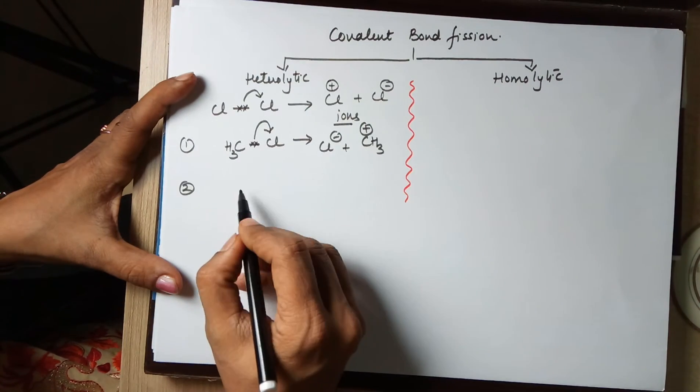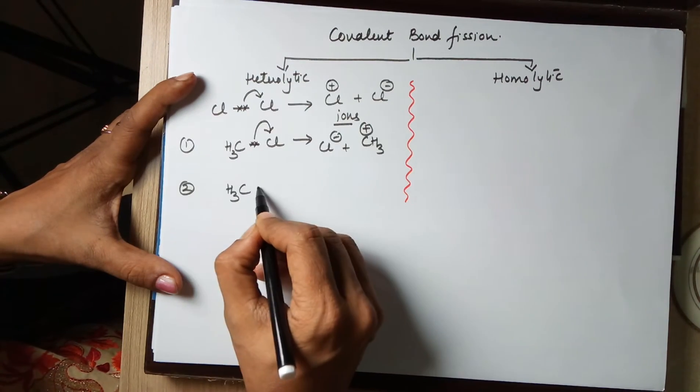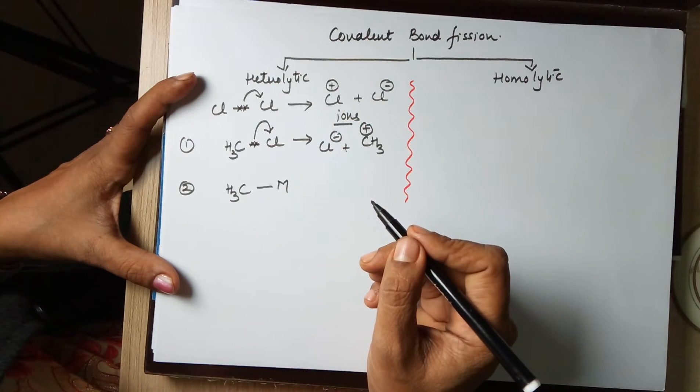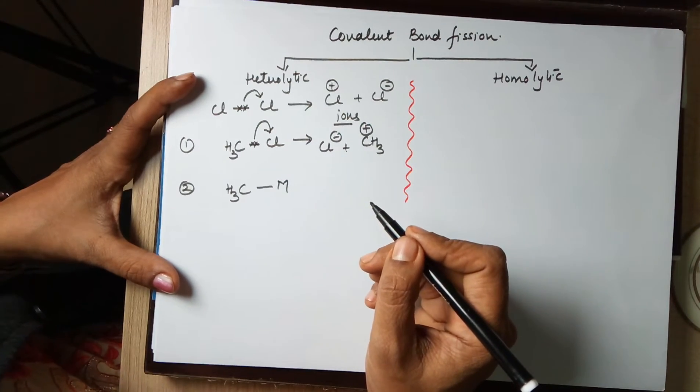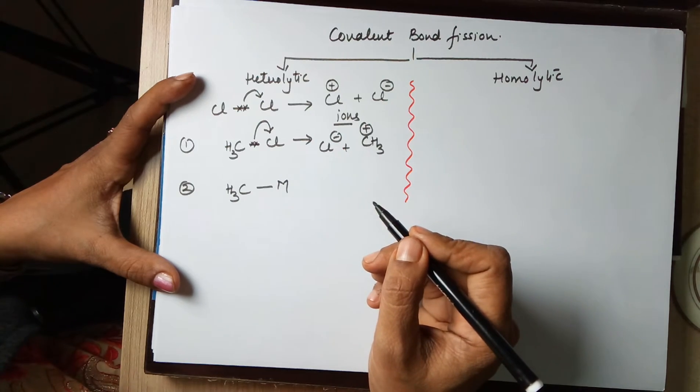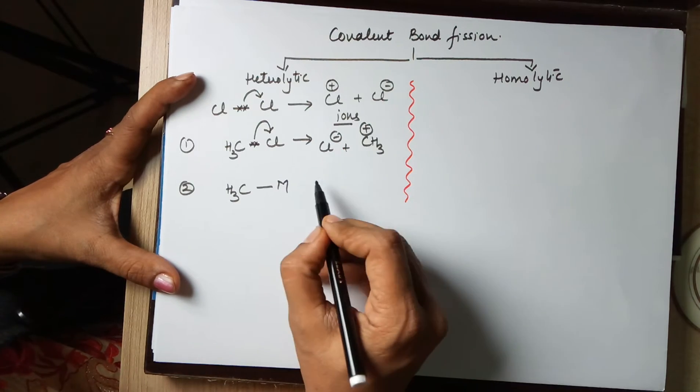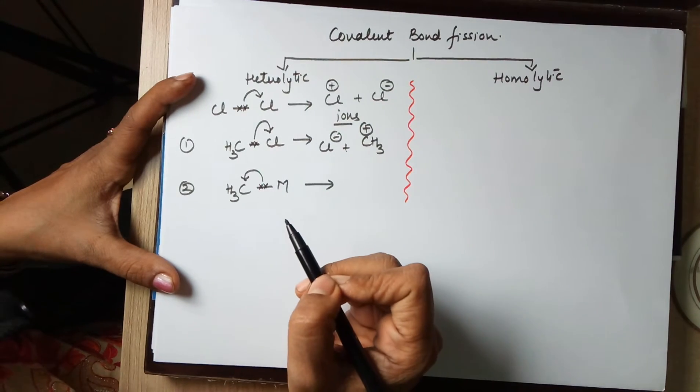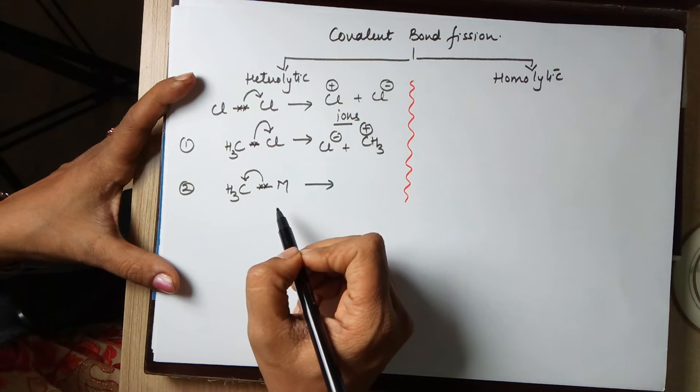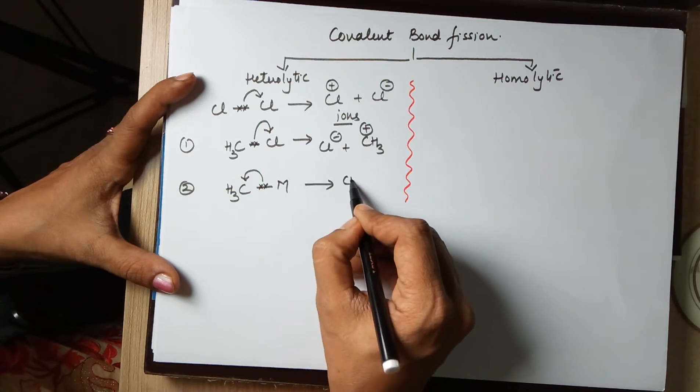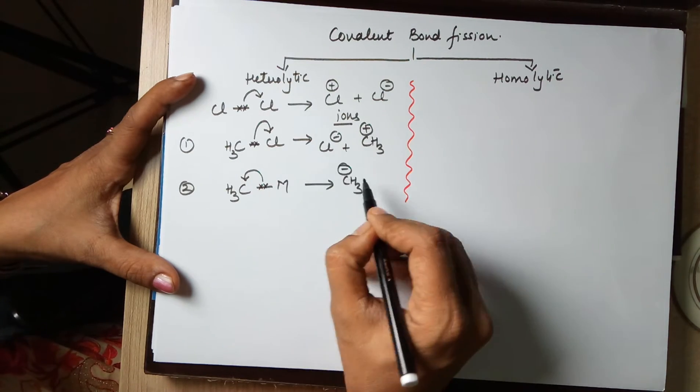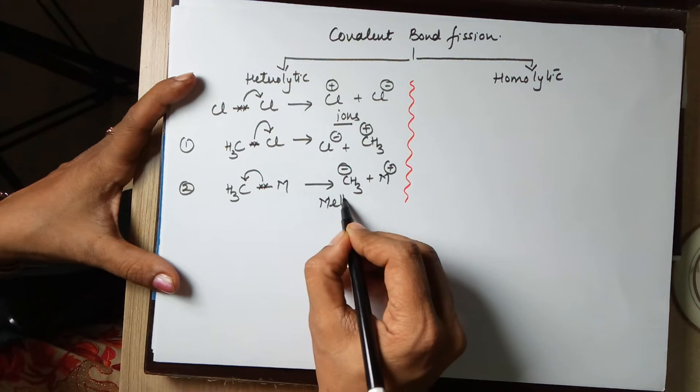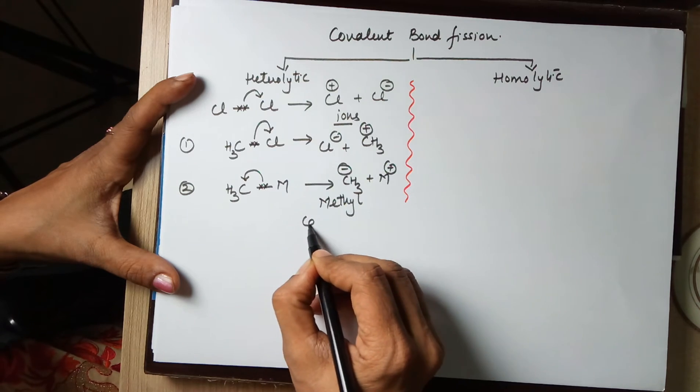The second example under this category could be where a methyl group is bonded to a metal but there is a covalent character in the bond. Which means the metal has to be a small sized atom like lithium for example. In this case the shared pair of electrons between the two has to go towards carbon, carbon being more electronegative than the metal. Therefore methyl group in this case gets a negative charge while the metal gets a positive charge. You end up in the formation of a methyl carbanion.